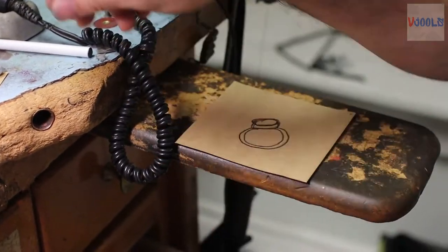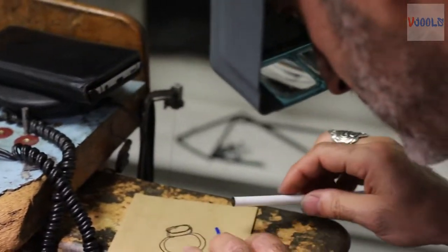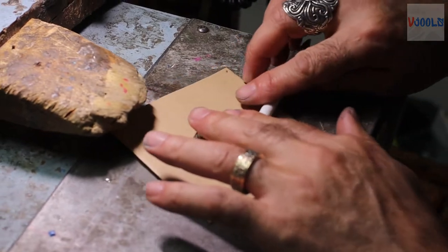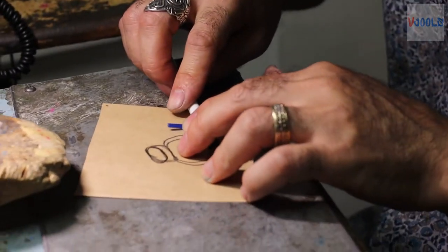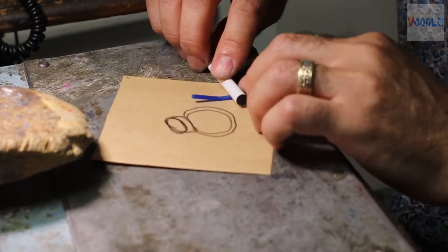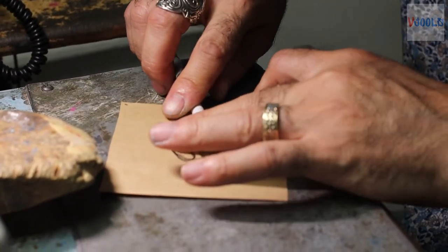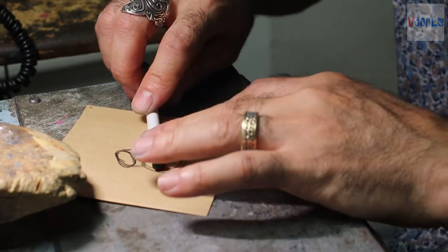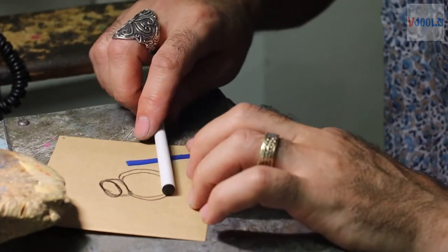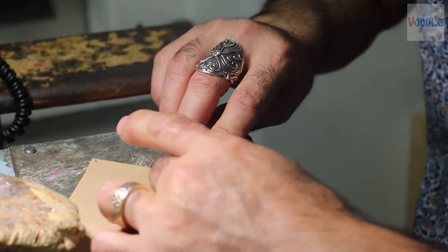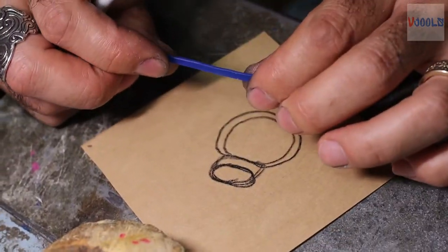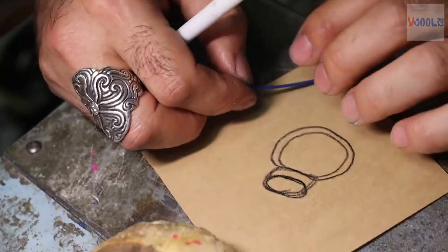In order to do that, I'm going to take this wax and I'm going to flatten it. This is about one millimeter thickness.